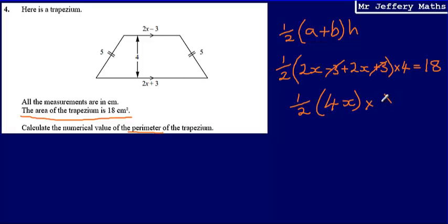So what I'm left with is half of 4x multiplied by 4, which gives me 18. Let's tidy this up as well. Half of 4x would be 2x.